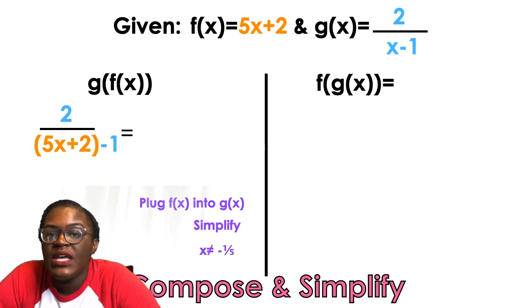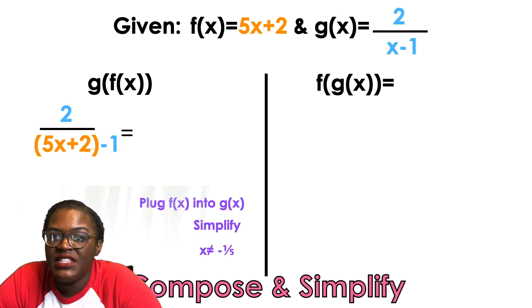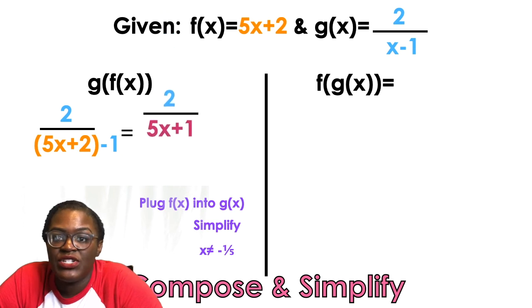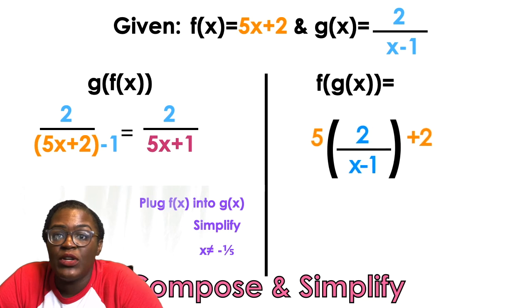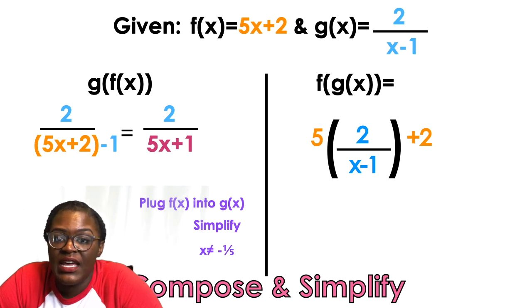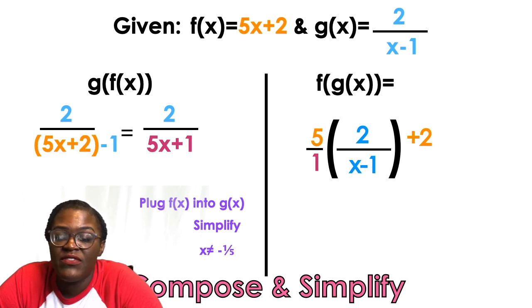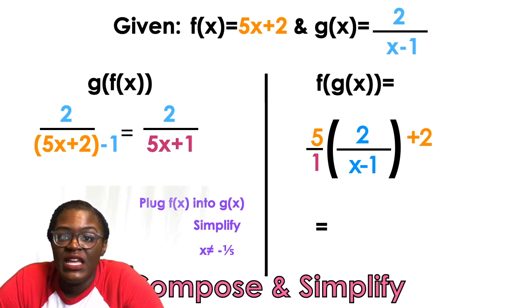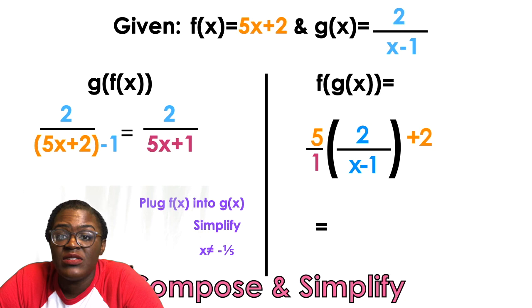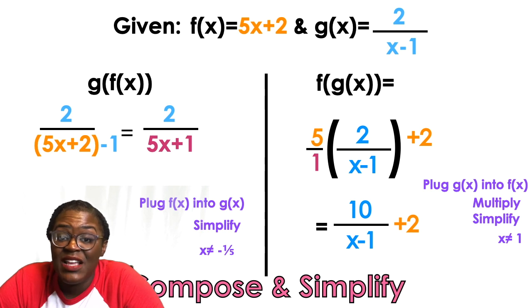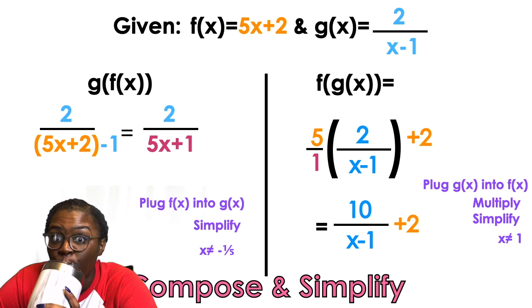Now going the other direction: F of G of x means put G inside of F. G is 2 over (x minus 1), so replace the x in F with that entire fraction. Multiply 5 times 2 over (x minus 1) — make 5 a fraction with 1 — giving 10 over (x minus 1), and then add the plus 2 on the outside. That is composing functions.